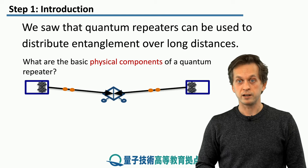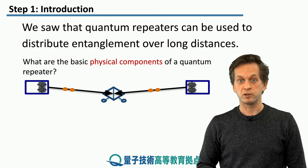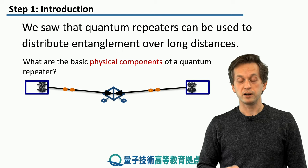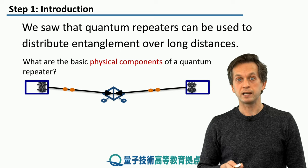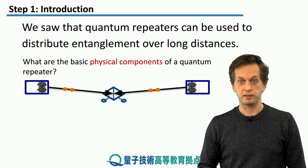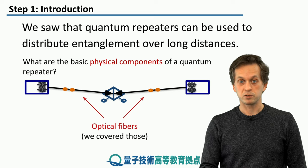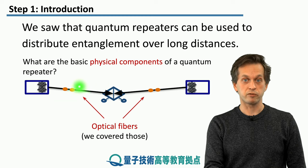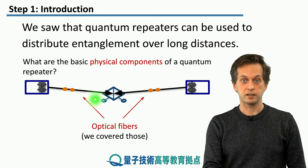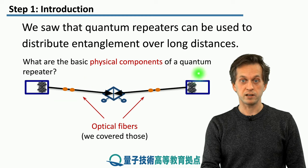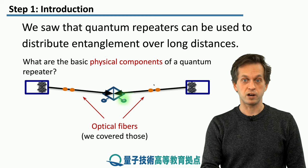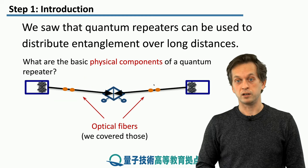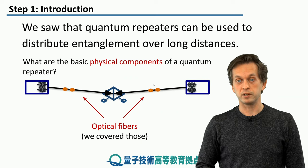But what are the individual physical components of a quantum repeater, and more importantly how can we implement them? First we need optical fibers to carry our photons — that's kind of obvious and we have already covered optical fibers in some length.